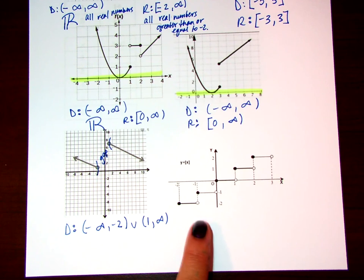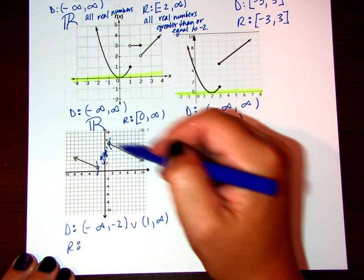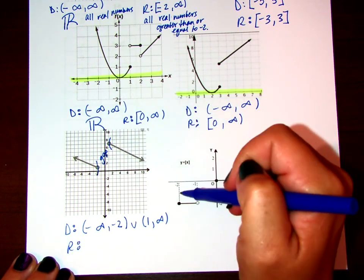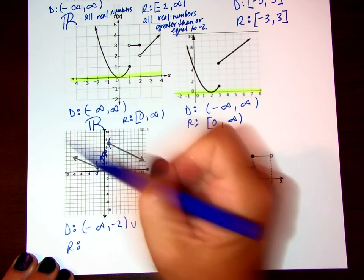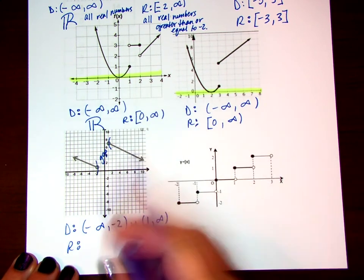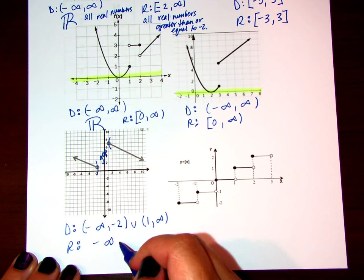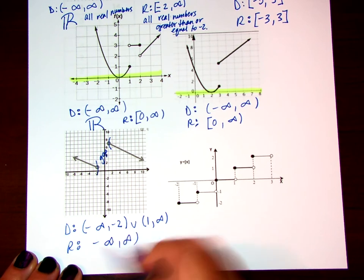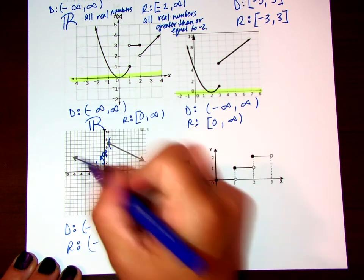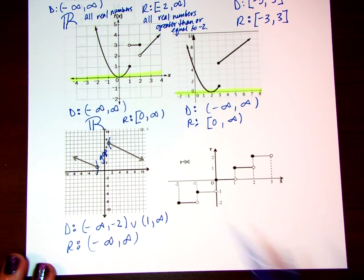For the range on that graph, it's going forever down and forever up, even though it's a slow progression. So the range goes from negative infinity to infinity because there is overlap between both pieces, and it goes forever in both directions.